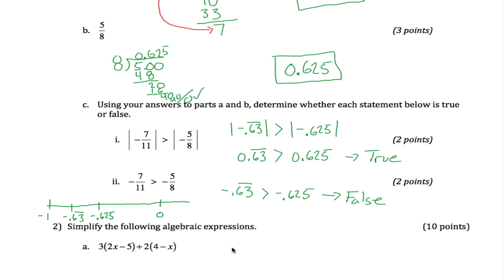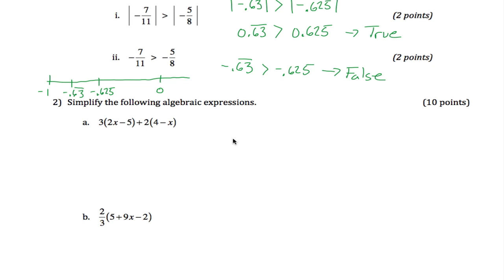Alright, good enough. Now we have these two algebraic expressions that we're asked to simplify. What this will end up being is an exercise in distributing. So what you do is 3 times this whole thing. We have to take the 3 and multiply it to both terms. And then we'll take the 2 and multiply that to both terms.